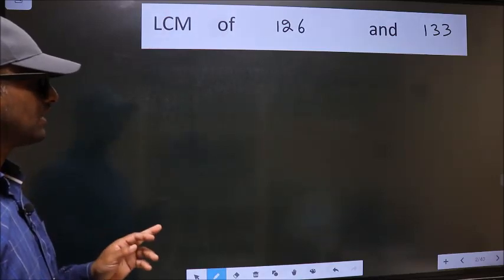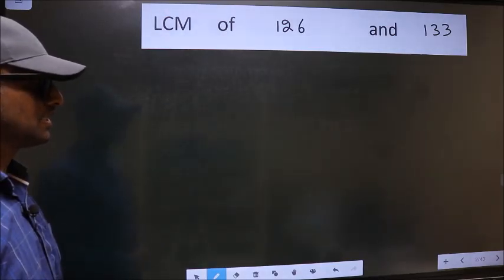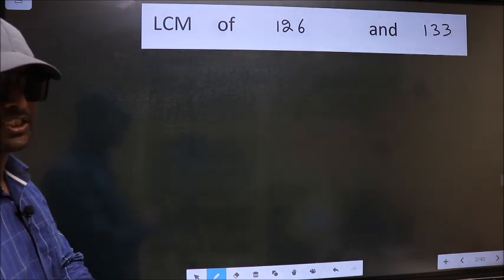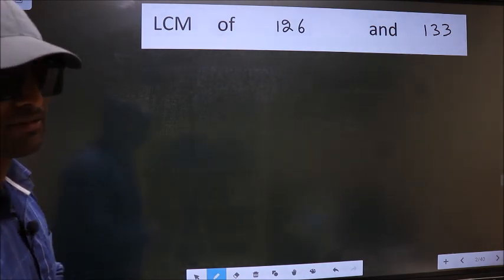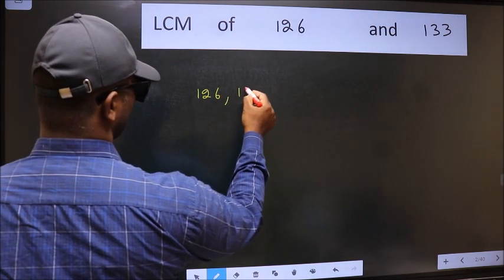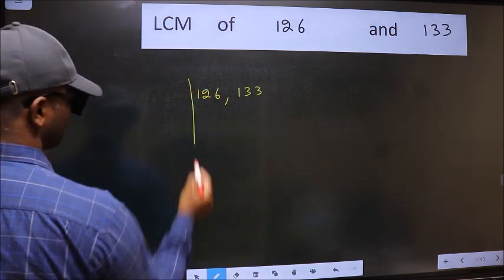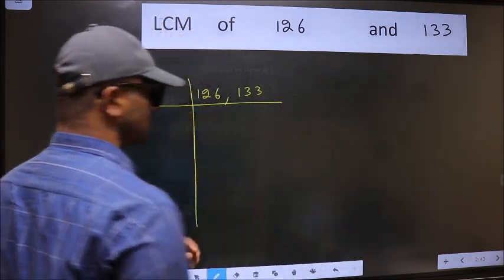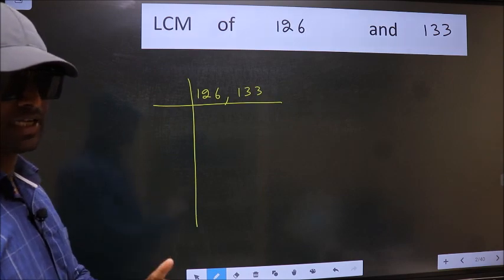LCM of 126 and 133. To find the LCM, we should frame it this way: 126, 133. This is your step 1.